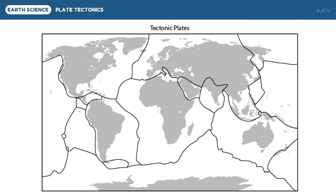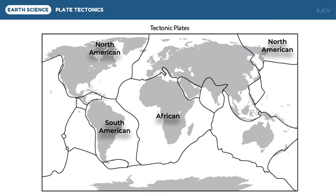Plates can either be primary (or major) or secondary (or minor), depending on their size. The primary plates include the following: First, the North American Plate, which includes most of the North American continent, Greenland — which is politically a part of Europe — and the northeasternmost deep part of Russia. Second, the South American Plate, which includes the entire South American continent. Third, the African Plate, which includes the African continent. Fourth, the Eurasian Plate, which includes Europe and most of the Asian continent, except for the Middle Eastern region, India, and a small portion of the Indonesian archipelago.